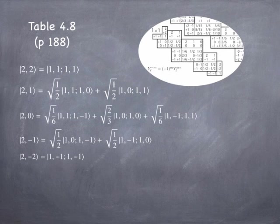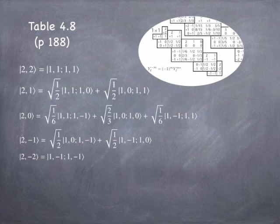So I end up with five states of total angular momentum 2 with the five possible z-components, composed of various combinations of individual electron states. Now I want you to look at symmetry. If I swap the two electrons in any of these superpositions, in |2,2⟩ you end up back where you started. In |2,1⟩ you just exchange the two terms but the total superposition is unchanged. In |2,0⟩ the first and last terms change places, but the middle term is unaffected since both electrons are in the same state.